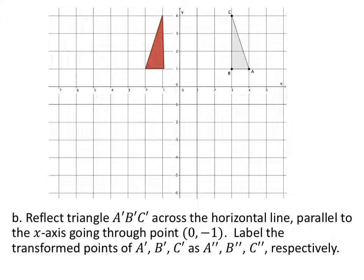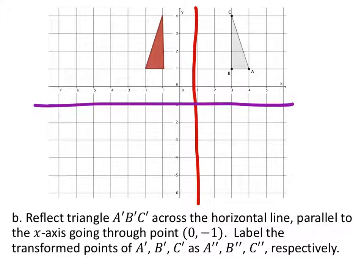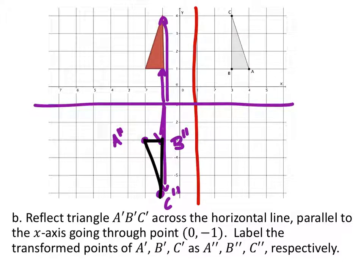Now, after reflecting it across this line that goes through 1, 0, it wants us to reflect it over the line parallel to the x-axis, horizontal line, and it goes through 0, 1. So it's going to be this purple line. So once again, B prime is two up, so B double prime will be two down. And then A double prime is right next to it. And then C is five up, so we've got to go five down to get C double prime. And this is our new triangle, right there.